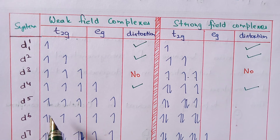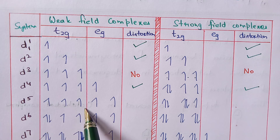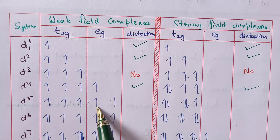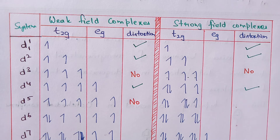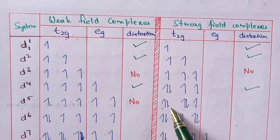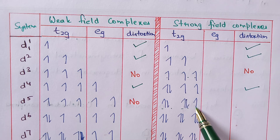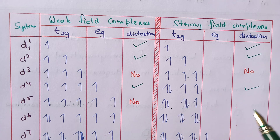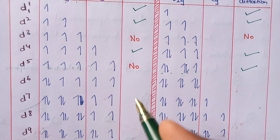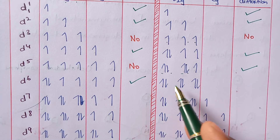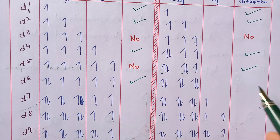For D5 in weak field, all T2G orbitals are equally filled and EG is also equally filled — no distortion. In strong field D5, some orbitals are paired up while one remains unpaired — unequal distribution, so Jahn-Teller distortion takes place. D6 in weak field has unequal distribution and shows Jahn-Teller distortion. In strong field D6, everything is equally filled — no Jahn-Teller distortion.